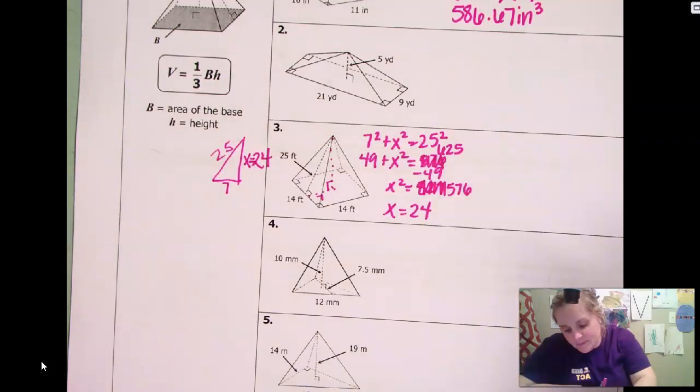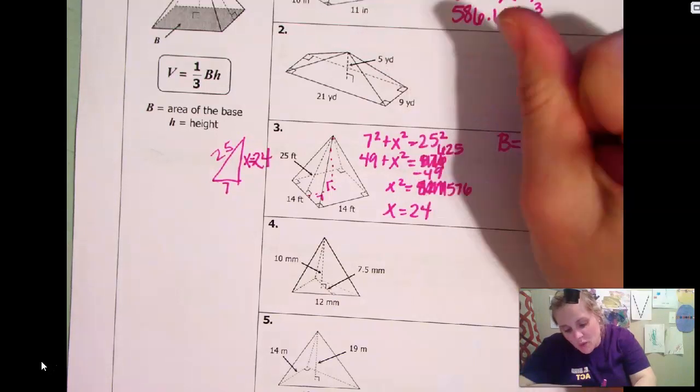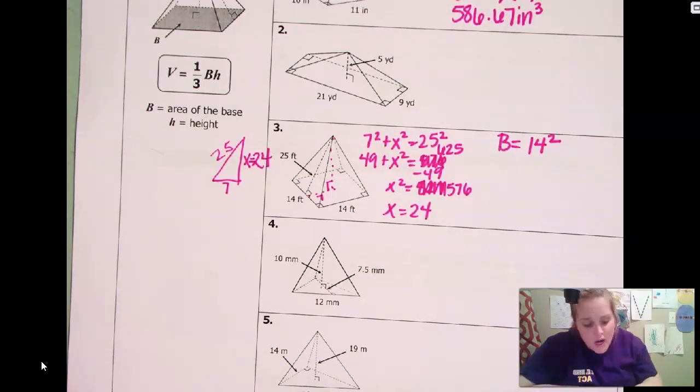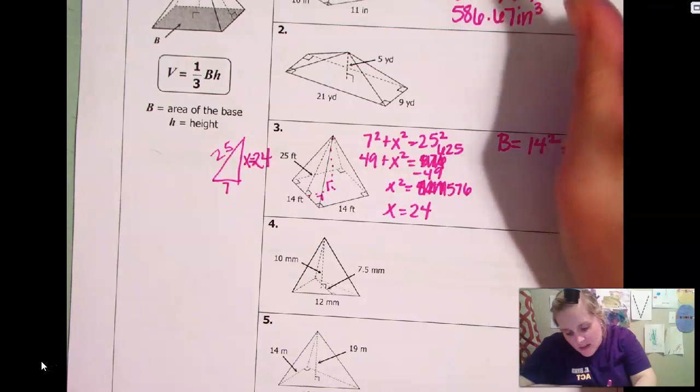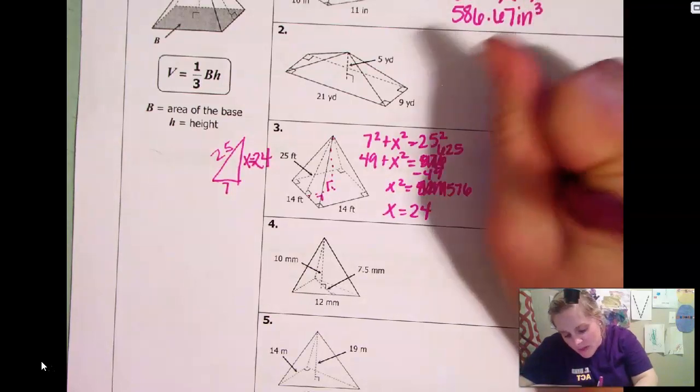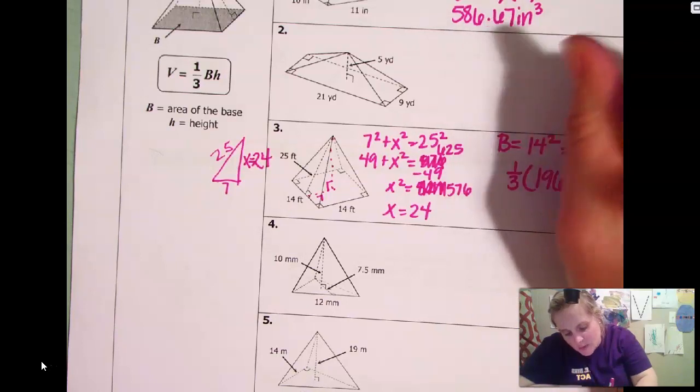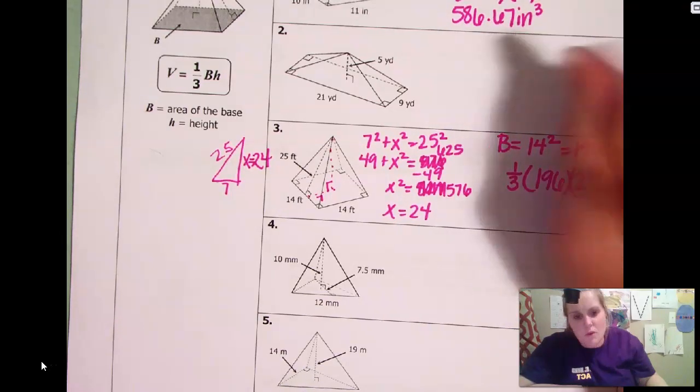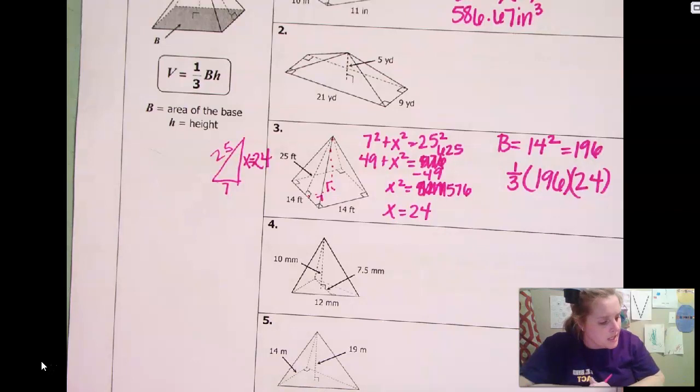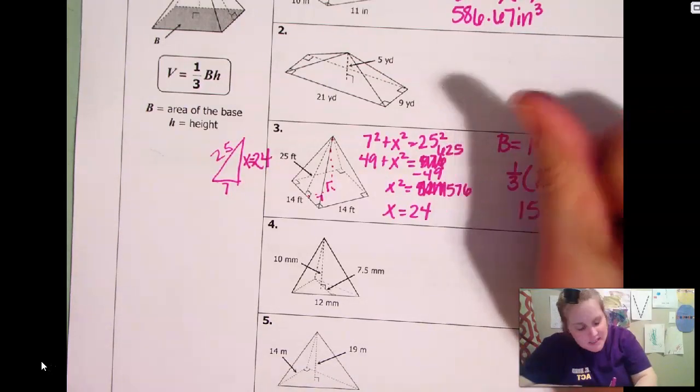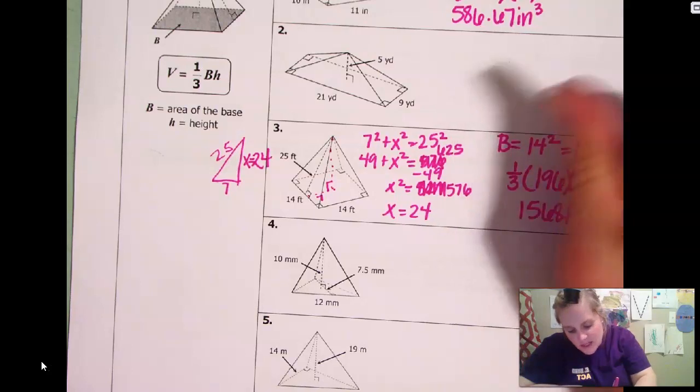So to find the base, it is a square, it is a square. So I can just do 14 squared, or I could have done 14 times 14. Either one is fine. That gives me 196. That's my big B. So one third big B, which is 196 times the height, which is what we just found, 24. Plug that in your calculator and you get 1568 feet cubed. Okay.